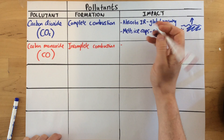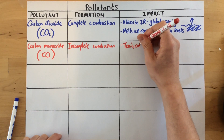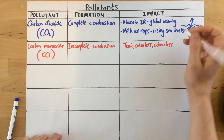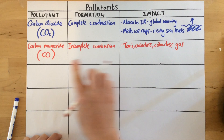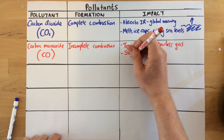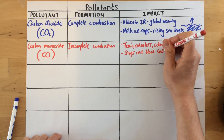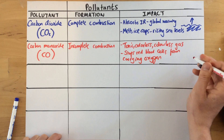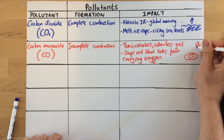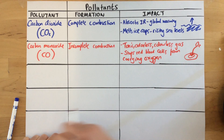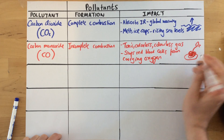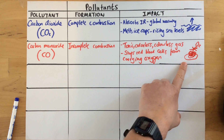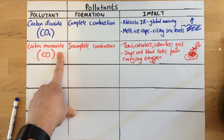Carbon monoxide is a particularly nasty substance. It's a toxic, odourless, colourless gas, which means you can't smell it and you can't see it, making it extremely dangerous. It stops red blood cells in your body from carrying oxygen, causing you to suffocate. Normally a red blood cell would carry O2 around the body to every cell, but carbon monoxide binds to the red blood cell and stops the oxygen from binding. A high enough dose will kill you.